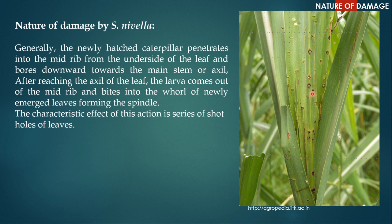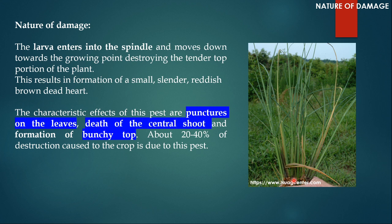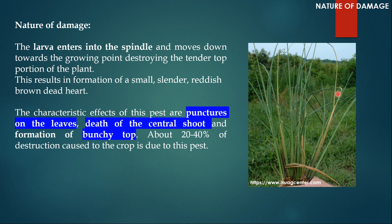Because the Scyrpophaga nivella larva enters the stem from the top, the growing tissue is eaten by the larvae and as a result the central leaves die and become dry and brown. If you look at the plant, you would see that the central leaf has died while the other leaves are still alive. This symptom — the dead central shoot — is known as dead heart.